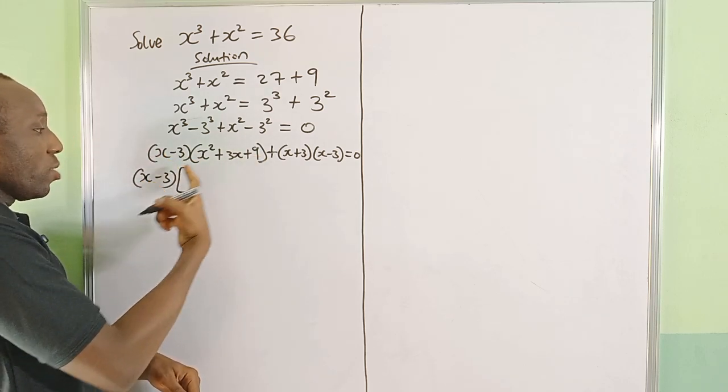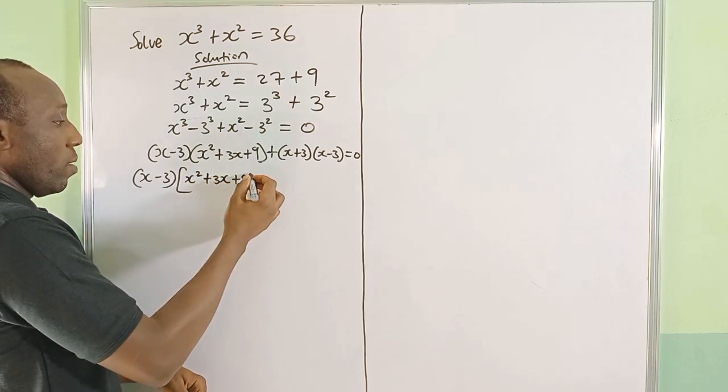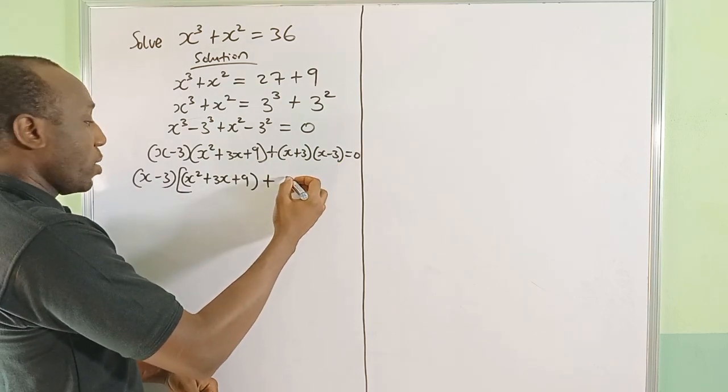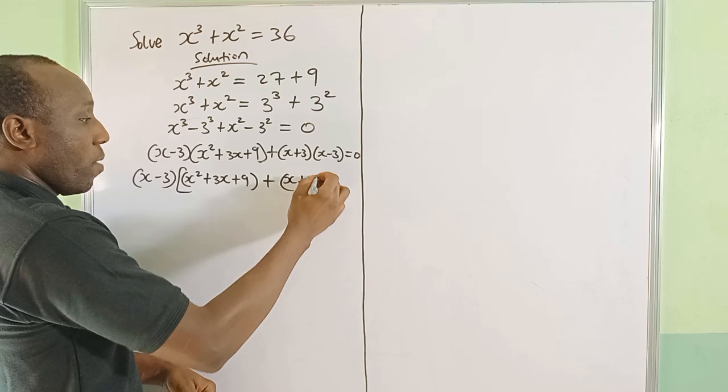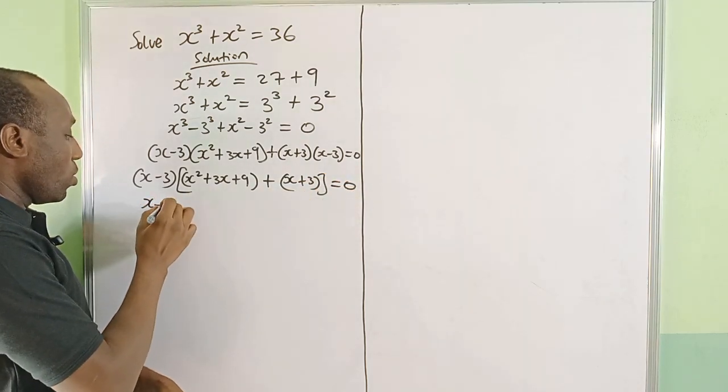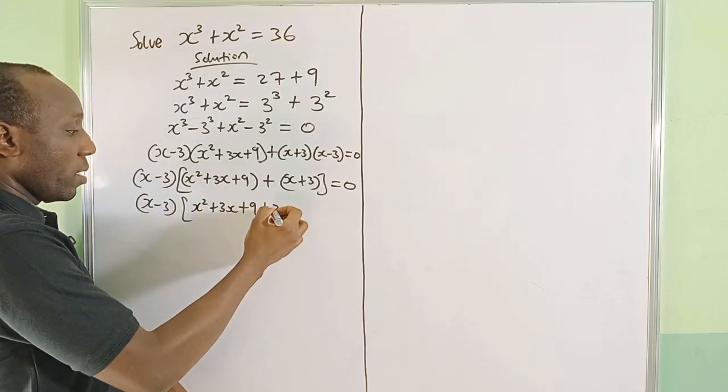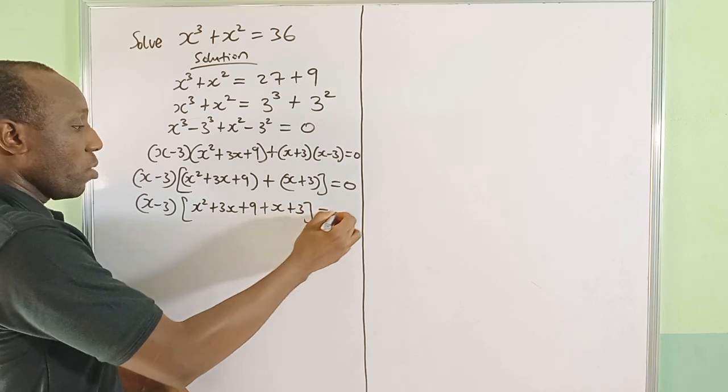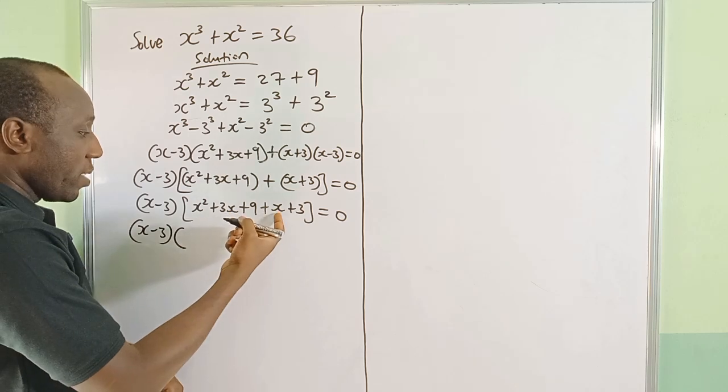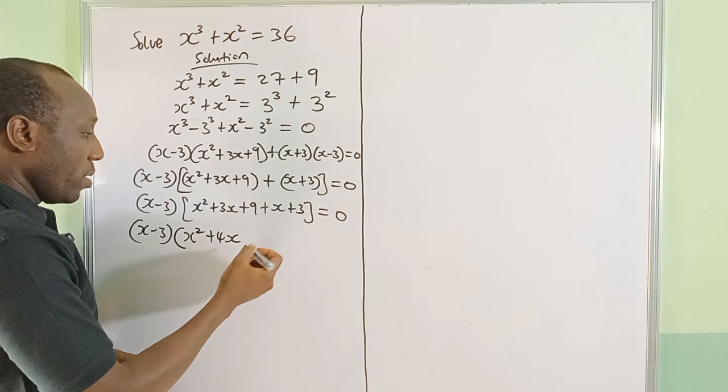That would be (x - 3)(x² + 3x + 9 + x + 3) = 0. Let's simplify what we have in this bracket: x² + 3x + 9 + x + 3 = 0. That will be (x - 3)(x² + 4x + 12). 3x + x is 4x, 9 + 3 is 12.